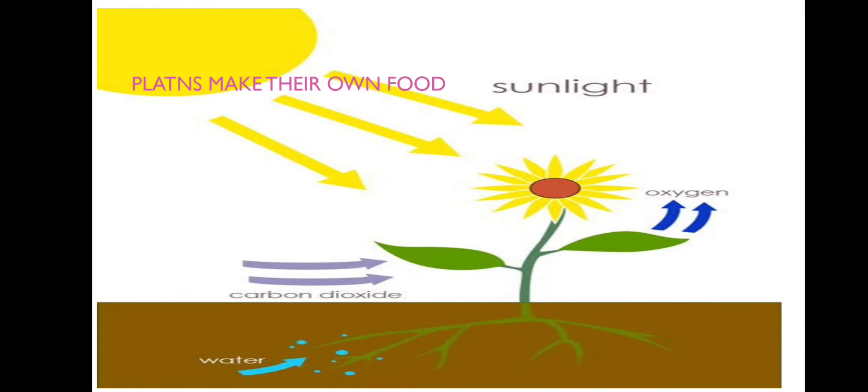Now we will discuss plants make their own food. You have never seen that you gave plants something to eat, never. They are always givers. They always give us and we can't give them anything. So how do plants make their food? Plants make their food with the help of sunlight, air, and water.